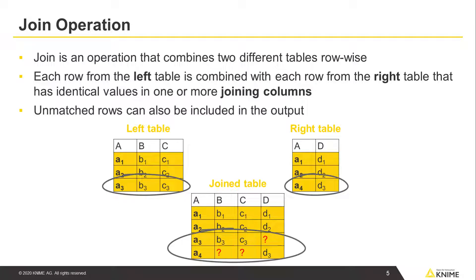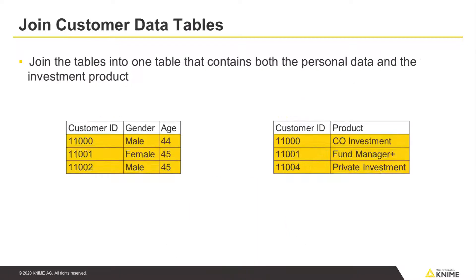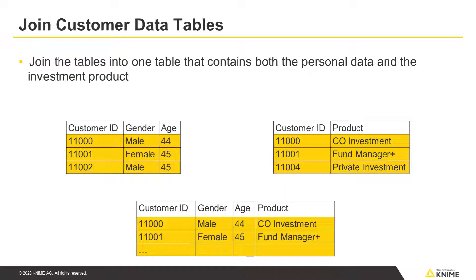Unmatched rows can also be included in the output. We want to join these two tables into one table that contains both the personal data and the investment product. The customer ID column is present in both tables and uniquely identifies the customers. Therefore, we will join the tables based on the values in the customer ID column. Since the joining operation combines the tables row-wise, the two tables are called a left and a right table. In our case, the personal data table is the left table and the products table is the right table.